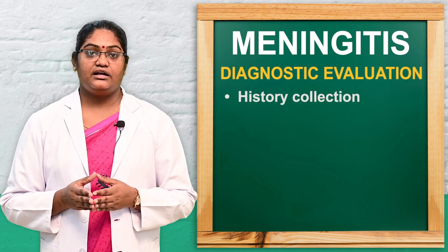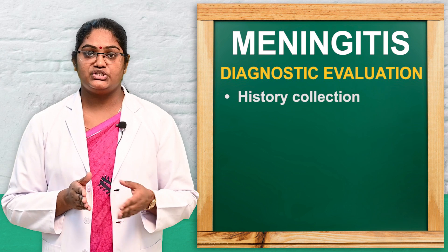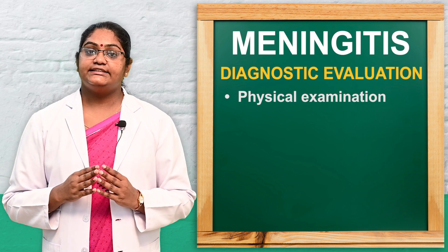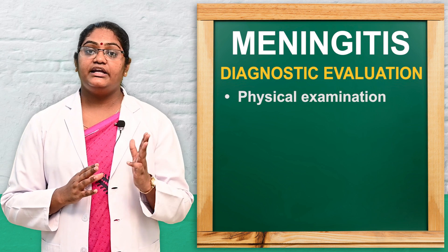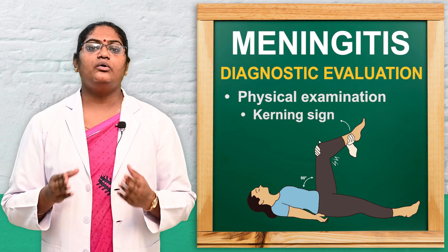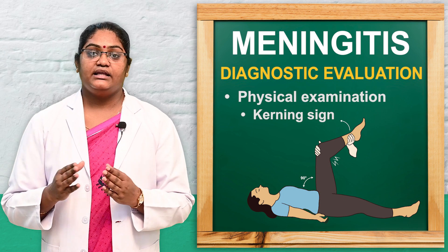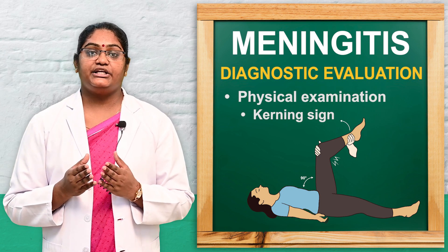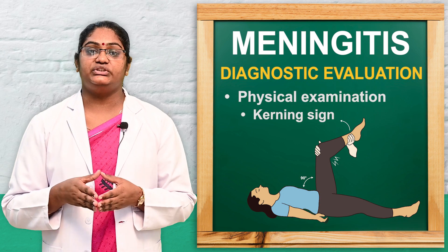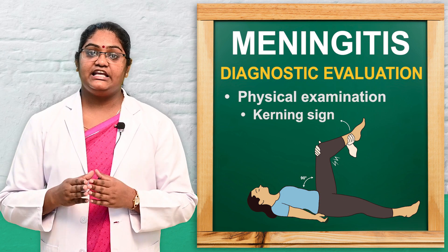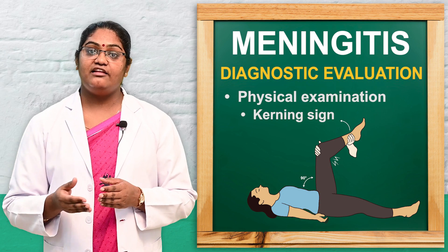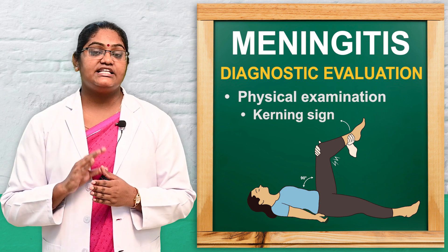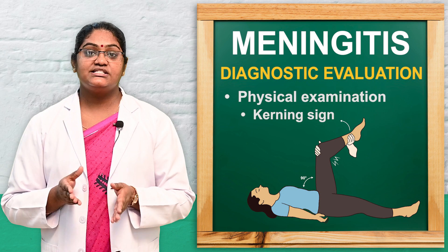The diagnostic evaluation includes history taking and physical examination. Under physical examination, we assess Kernig's sign, Brudzinski's sign, and nuchal rigidity. Kernig's sign is pain or stiffness of the hamstring muscles. We place the patient in a supine position, keep the hip at 90 degrees, and ask the patient to elevate the leg. If the patient feels pain or stiffness in the hamstring muscle, that is a positive Kernig's sign.